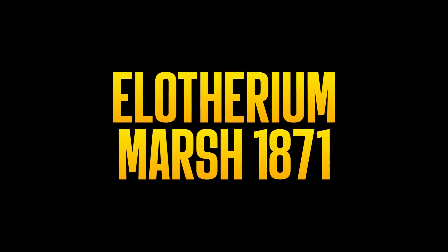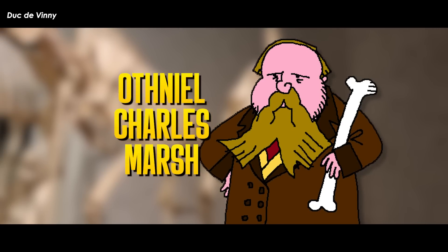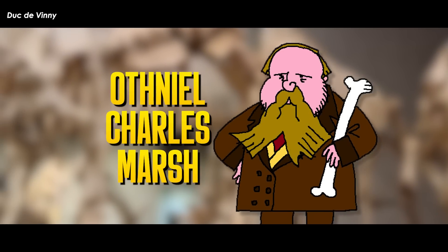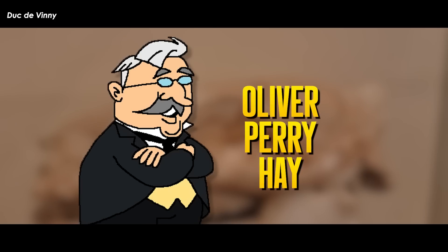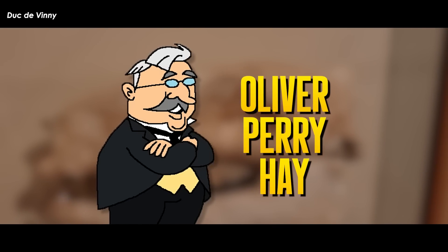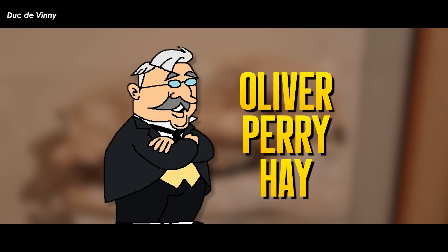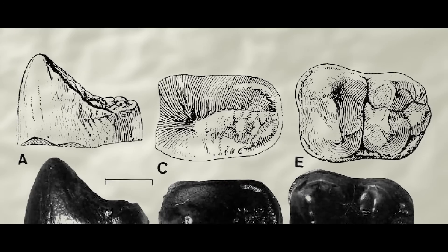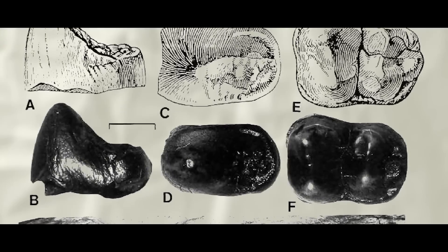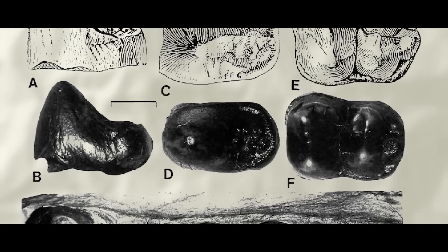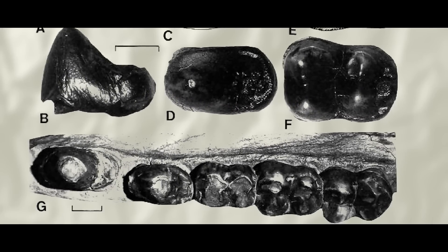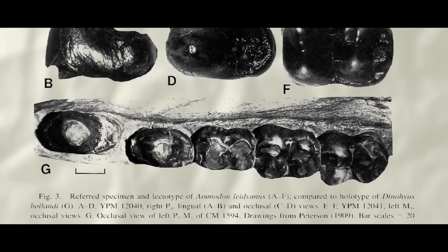Elotherium Marsh, 1871. O.C. Marsh was a funny little guy. In 1871, he had named some fossils of entelodonts Elotherium lydianum. Oliver Perry Hay, an American herpetologist, ichthyologist, and paleontologist active from the late 1800s till the early 1900s, correctly noted in 1902 that mention of this name by Marsh did not constitute proper proposal of a new species. Marsh's uses of the name do not even constitute an indication as defined by the ICZN. It was designated a Nomen Nudum in 1903.